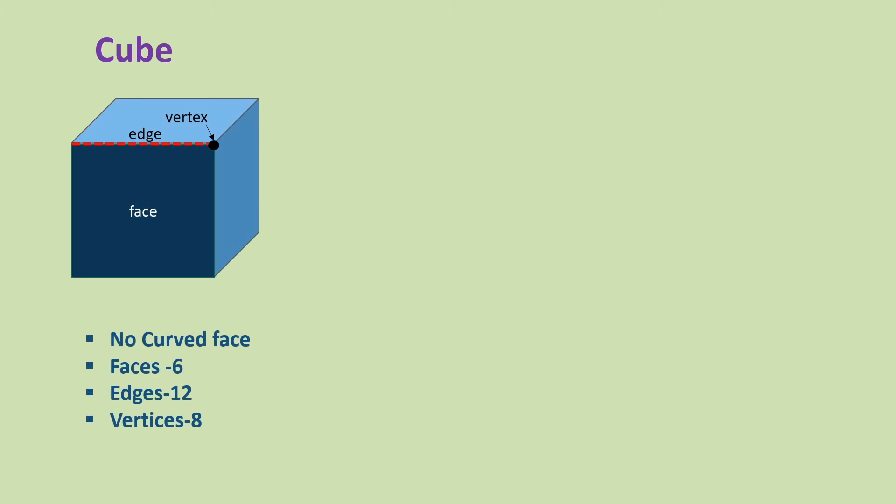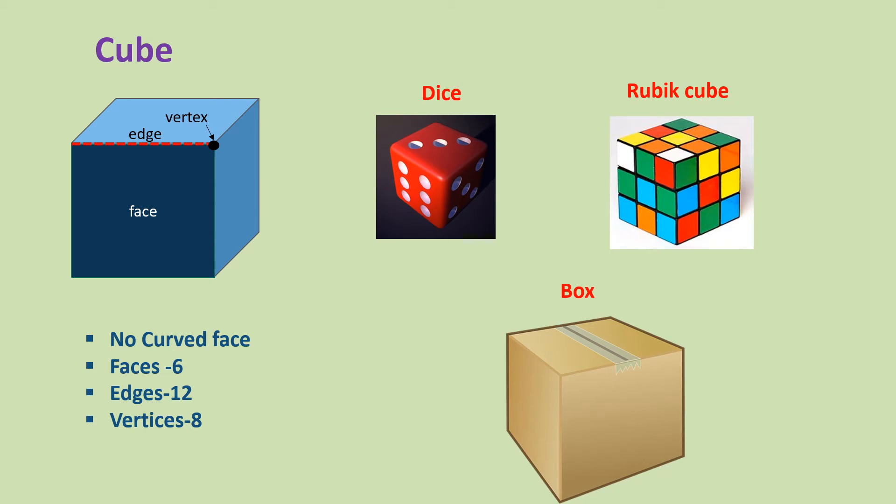Cube is another most common 3D shape. It has no curved face, six faces, twelve edges, and eight vertices. Some examples with cube shape are dice and Rubik's cube.